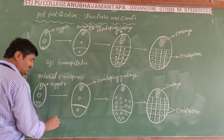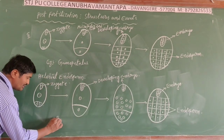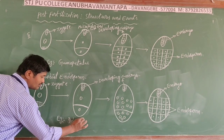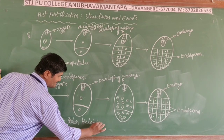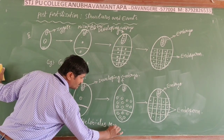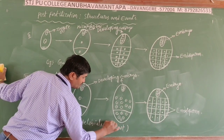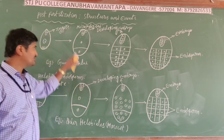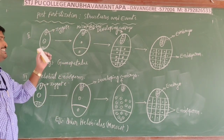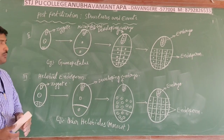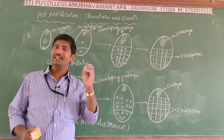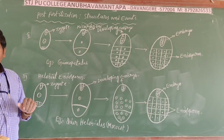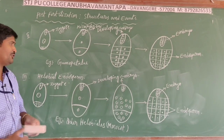The best example for the helobial (intermediate) type of endosperm is the order Helobiales, which is an order of monocotyledons. So the three types of endosperm based on development are: free nuclear endosperm, cellular endosperm, and helobial endosperm.